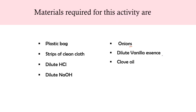Onions, dilute vanilla essence, and clove oil are substances whose odour changes in acidic or basic medium, and these are called olfactory indicators.